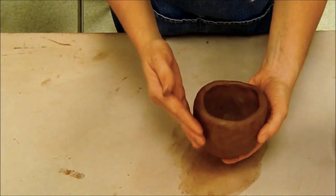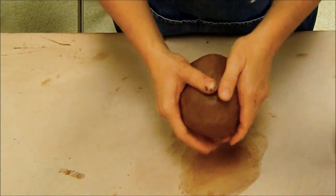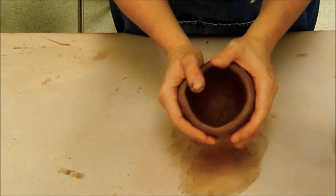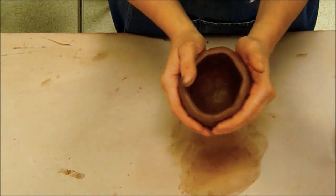We're going for cup forms so we want it a little bit taller than it is wide. So we keep it as narrow as we need it to be by squeezing in. If yours gets a little wide you just kind of squeeze in gently.